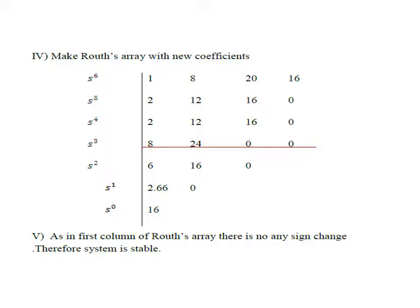Calculating the next rows: s^2 row gives 6, 16, 0; s^1 row gives 2.66, 0; s^0 row gives 16. Observing the first column of the completed Routh array — all elements have the same sign, so there is no sign change. Therefore the system is stable.